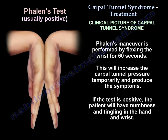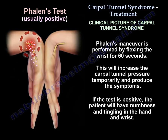Phalen's Test is usually positive. How is Phalen's Test done? It is done by flexing the wrist for 60 seconds. This will increase the Carpal Tunnel pressure temporarily and produce the symptoms. If the test is positive, the patient will have numbness and tingling in the hand and wrist.